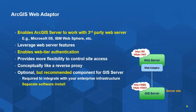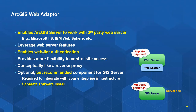The web adapter is the interface between ArcGIS Server and that third-party web server. It's optional but recommended because it gives you an extra layer of security. It acts as a reverse proxy — client applications connect to port 80 or 443, then get redirected to the GIS server. It also allows you to take advantage of security features built into web servers, such as web tier authentication. We go into more detail about the web adapter in the server admin session.